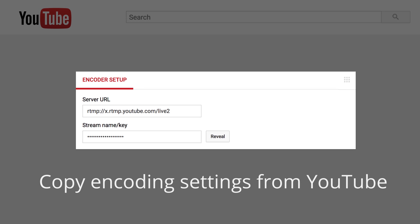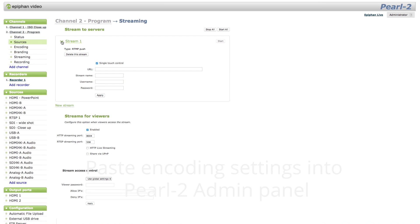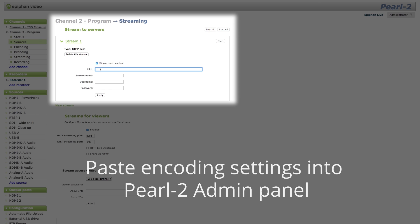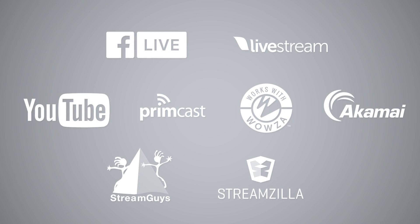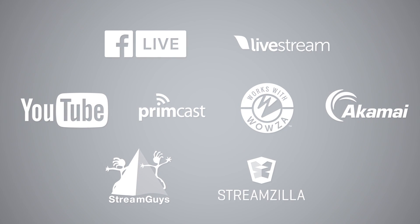We'll stream our event to YouTube at 720p at 1.5 megabit. Setting this up is very simple — just copy and paste your stream name and URL from your YouTube channel, set your preferred encoding settings, and you're ready to go live. This works more or less the same way for any CDN or streaming server. We can choose to stream at whatever encoding setting we have the bandwidth for, even at 4K.